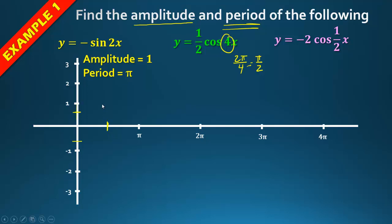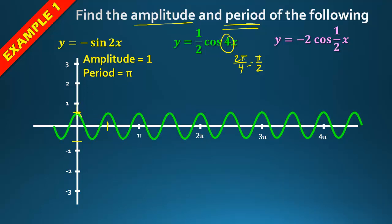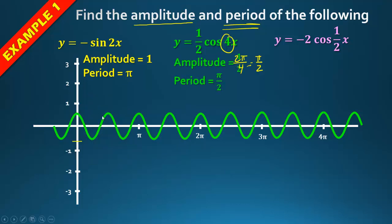Let's verify — the graph goes up, then down, then back up. That's one period from here to here, which is π/2. Amplitude is ½ because the coefficient in front of cosine is less than 1, and the period is π/2.